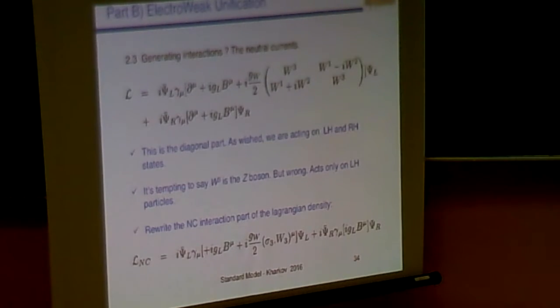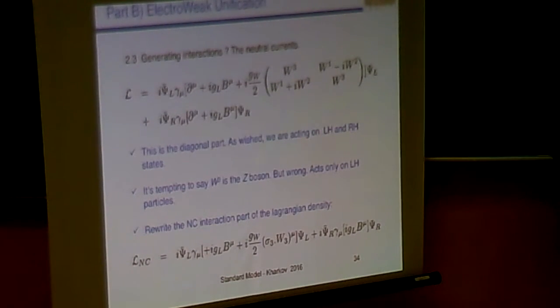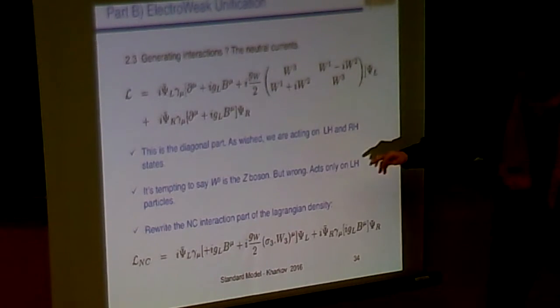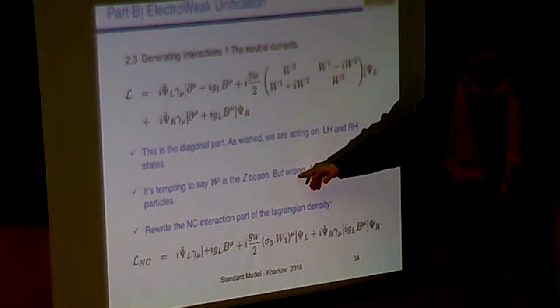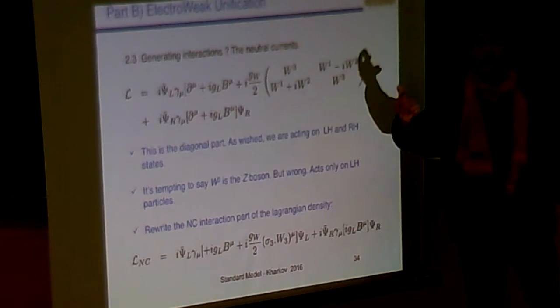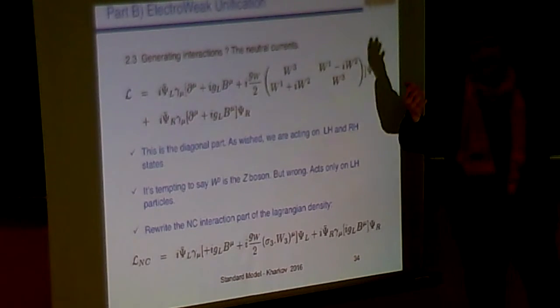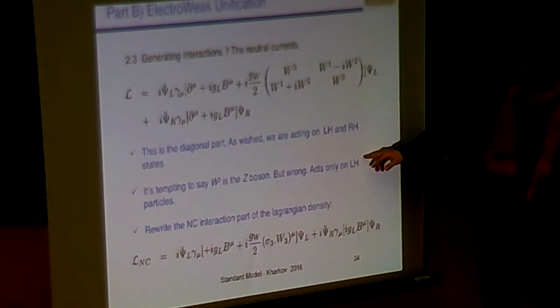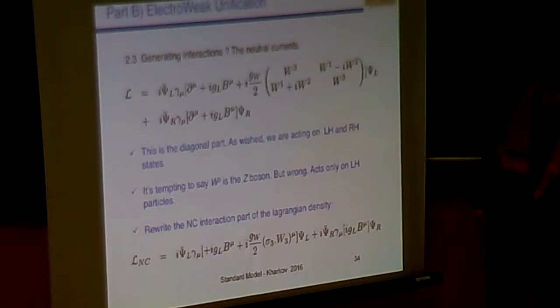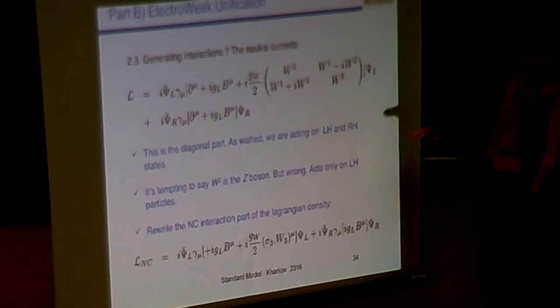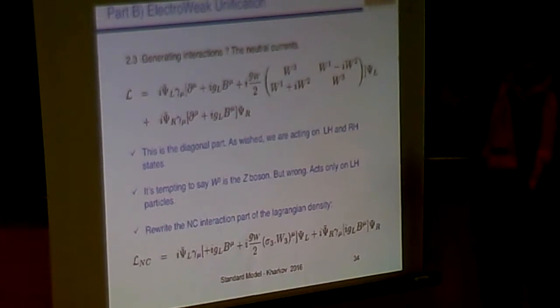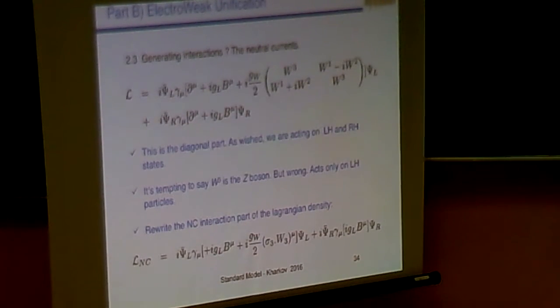Except that, a priori, that would mean I'm making a choice, and I know this choice is wrong, because neutral currents are maybe not dealing democratically between right-handed and left-handed, but dealing with both. And as such, I will have to make a treatment there, not losing generality in my theory writing.